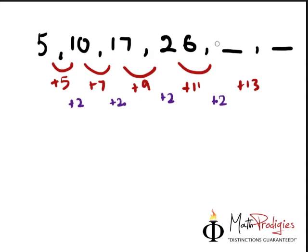So from here, you can straight away find out for part A. 26 plus 11 is going to give you 37, and you plus 13 to that, you get 50. So the next 2 terms are actually 37 and 50. Simple, right?